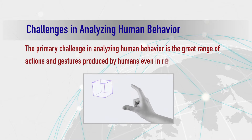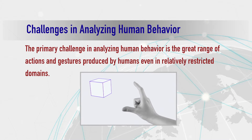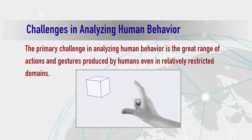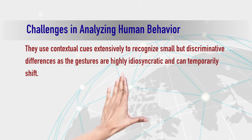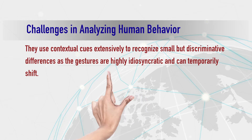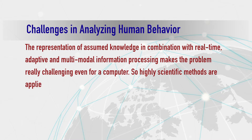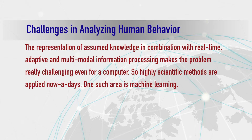Now let's move on to the challenges in analyzing human behavior. The primary challenge is the great range of actions and gestures produced by humans even in relatively restricted domains. Humans use contextual cues extensively to recognize small but discriminative differences, as gestures are highly idiosyncratic and can temporarily shift. The representation of assumed knowledge in combination with real-time adaptive and multimodal information processing makes the problem really challenging even for a computer, so highly scientific methods are applied nowadays for crime analysis and the analysis of human criminal behavior.